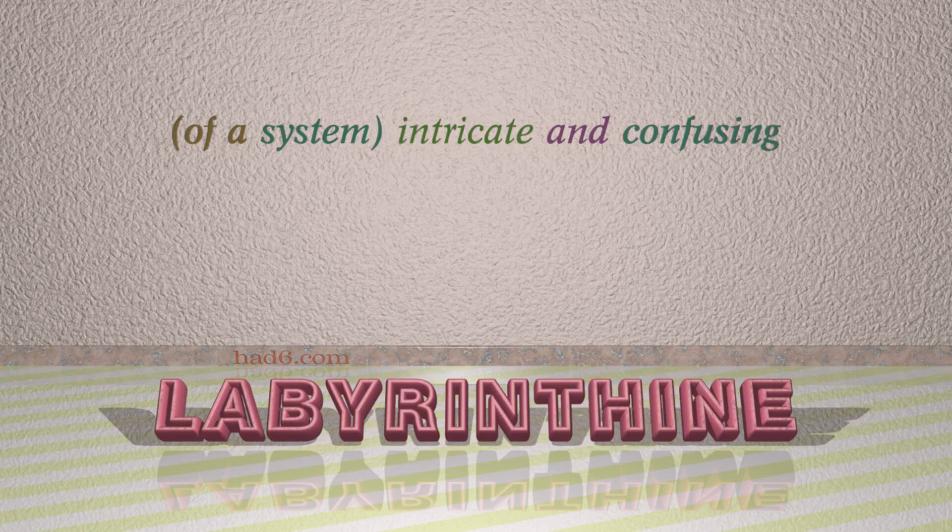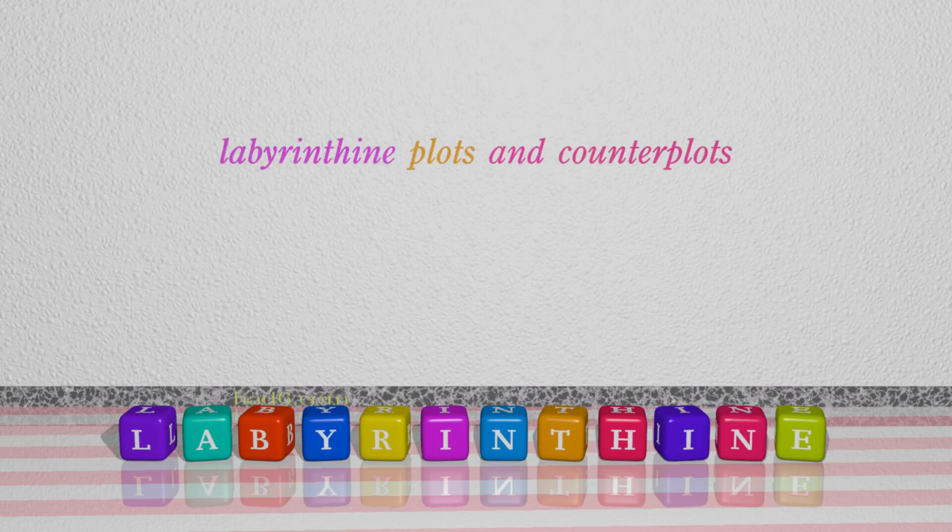Number 7: Labyrinthine. Which means of a system, intricate and confusing. For example: Labyrinthine plots and counterplots.